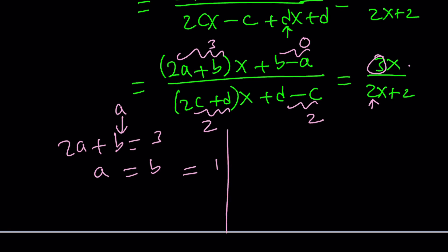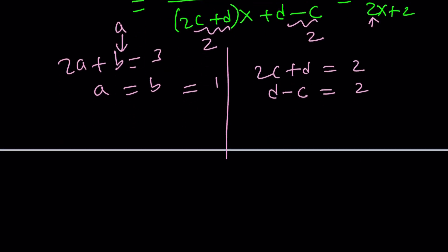And the second system, we can solve here. 2c plus d is equal to 2. And then we know d minus c is equal to 2. So there's a couple ways to go about it. You can negate one of these equations and turn this into negative 2, add them up, d cancels out, 2c plus c is 3c, which is 0. From here, c equals 0.